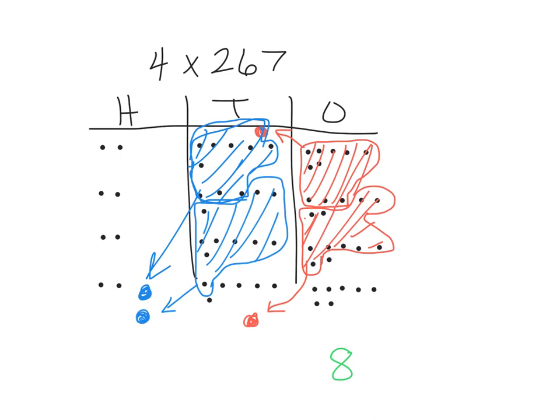And I don't have enough tens left over to make another hundred. So what do I have? I have one, two, three, four, five plus this one is six. So I have six tens left over.